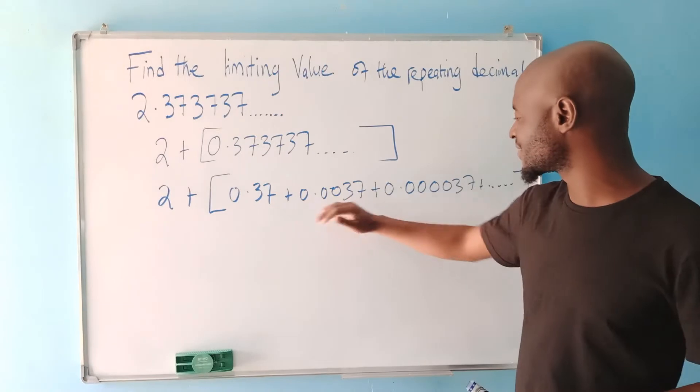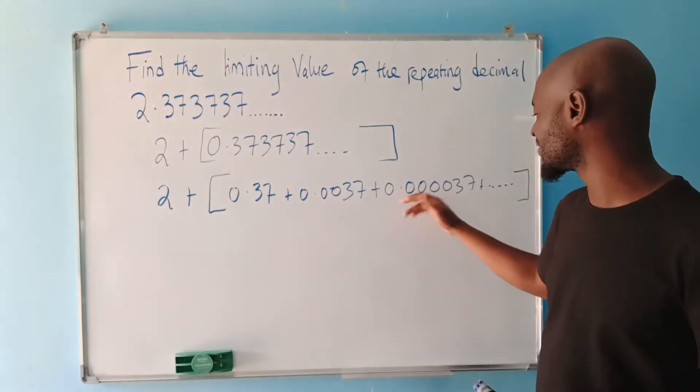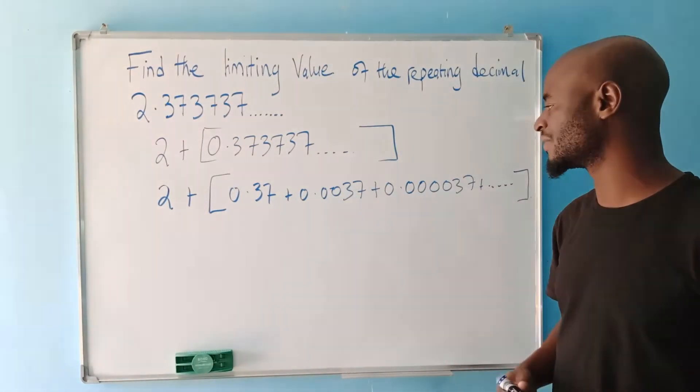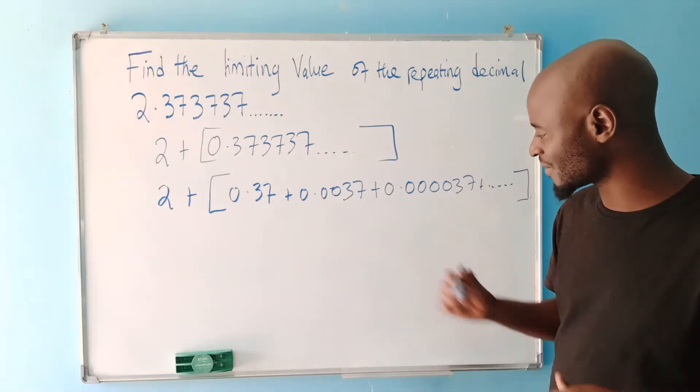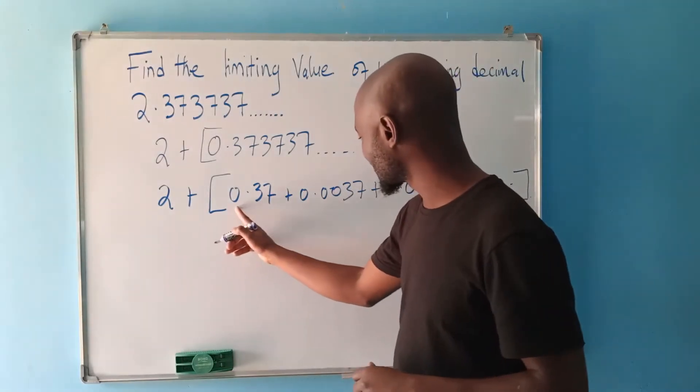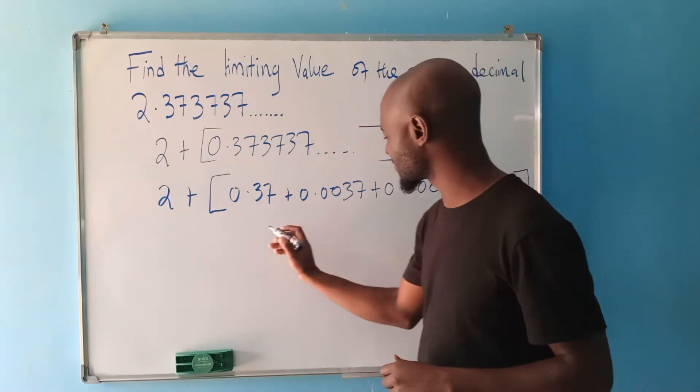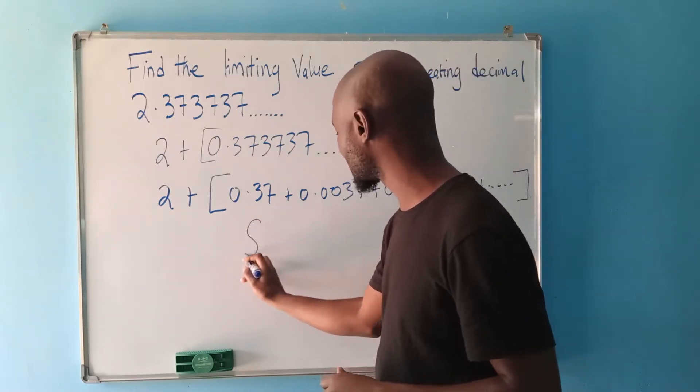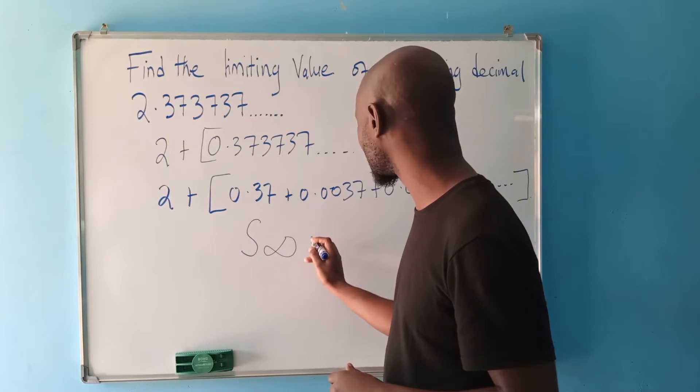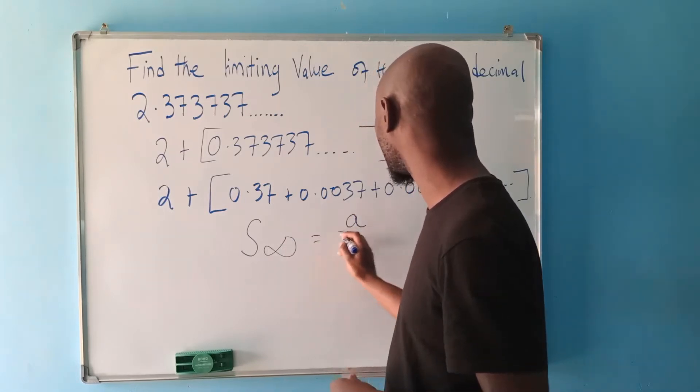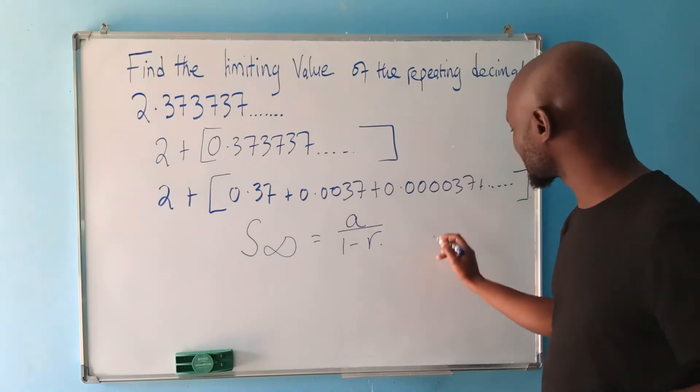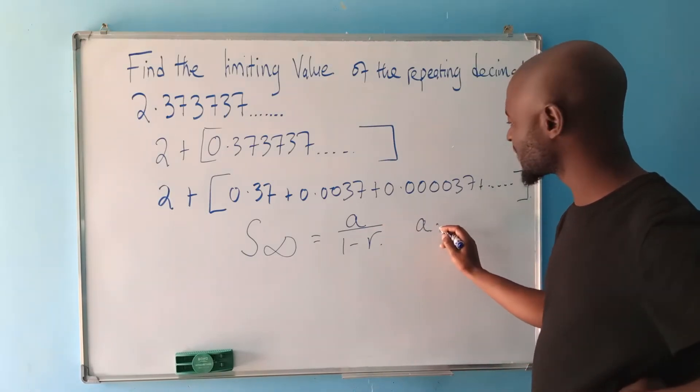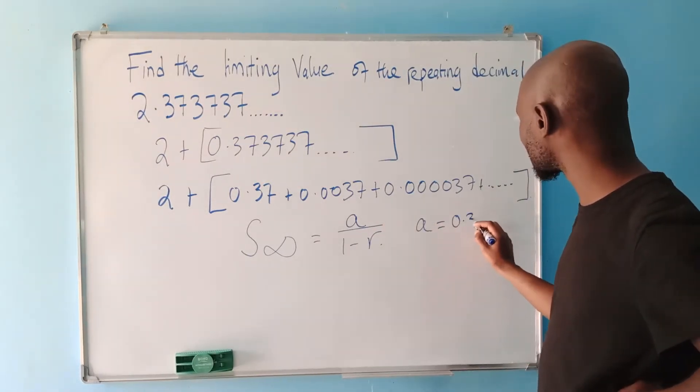If you divide this by that and this by that, you end up having the same number which we call the common ratio. So we are going to find the limit value for this one. So the limit value for this one is calculated by sum to infinity, which is given by the formula A over 1 minus R. So A is the first term. So the first term here is 0.37.